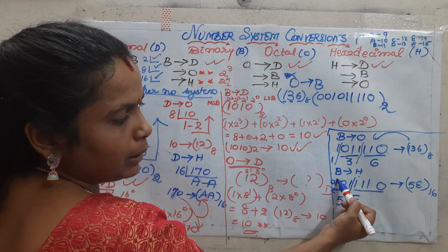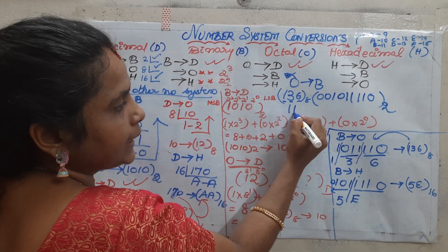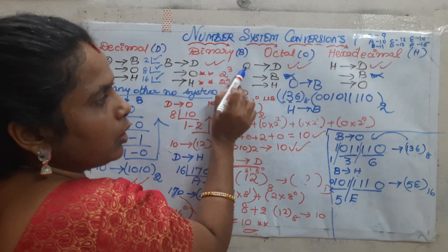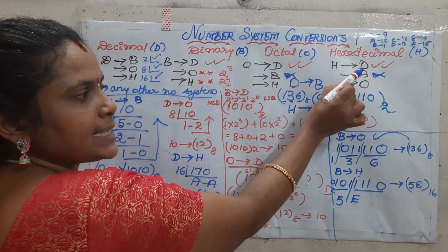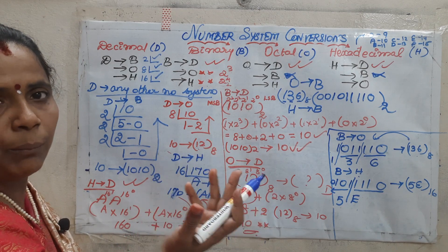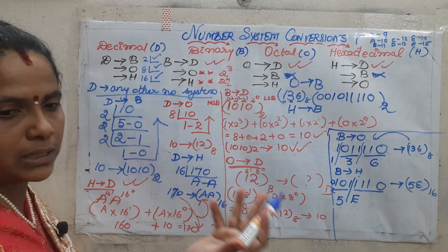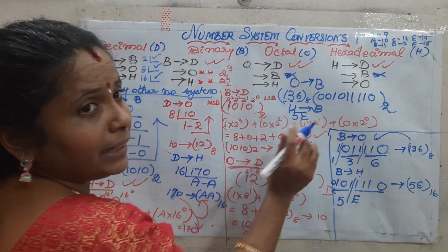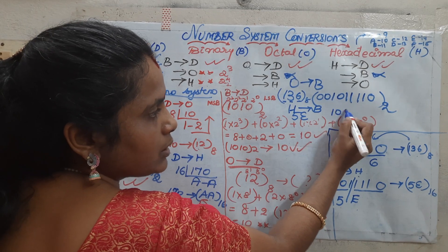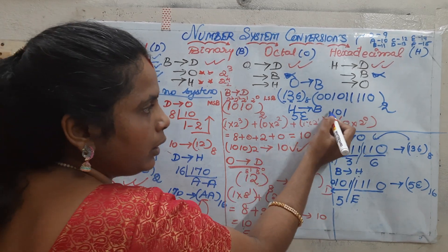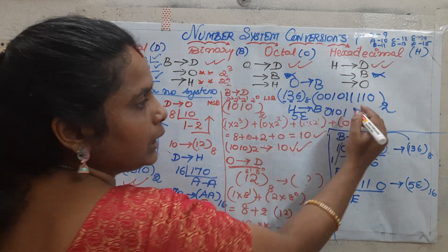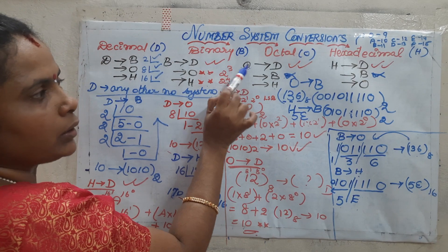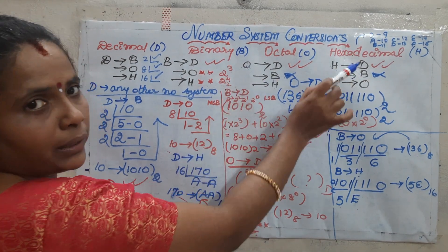Now hexadecimal to binary. We have seen octal to binary; now for hexadecimal to binary, the logic is: write each hexadecimal digit in terms of 4 binary bits. Our value is 5E. For 5: it is 0101 — include a leading zero to make 4 digits. For E: it is 1110. So 5E base 16 in binary is 01011110. Octal to binary and hexadecimal to binary are done.